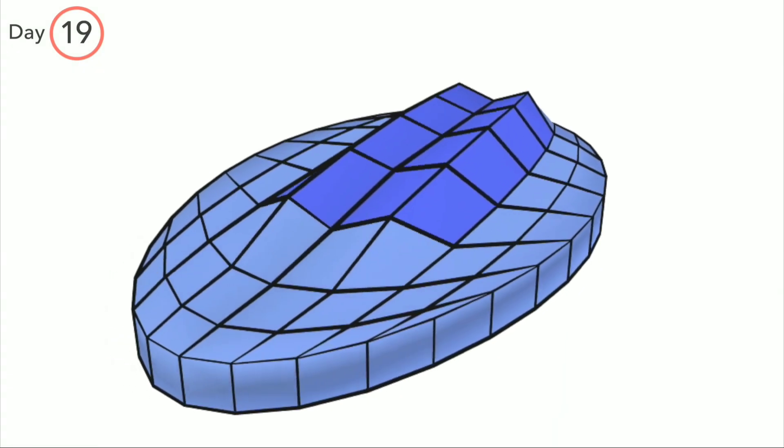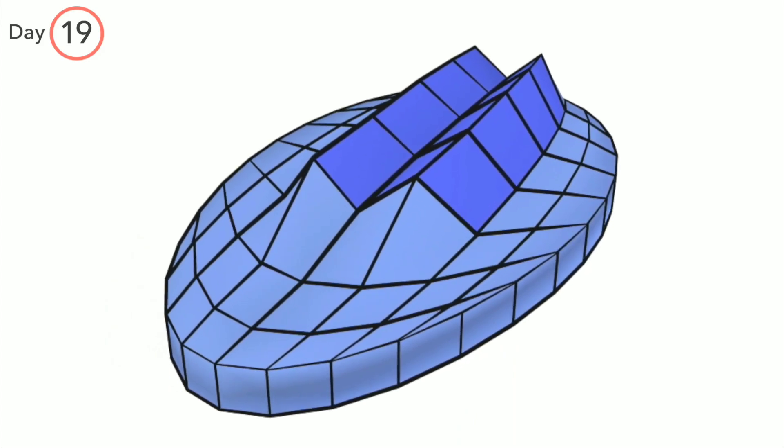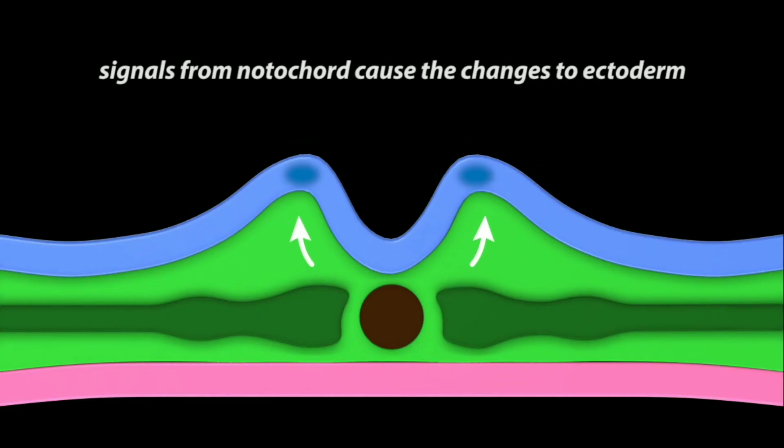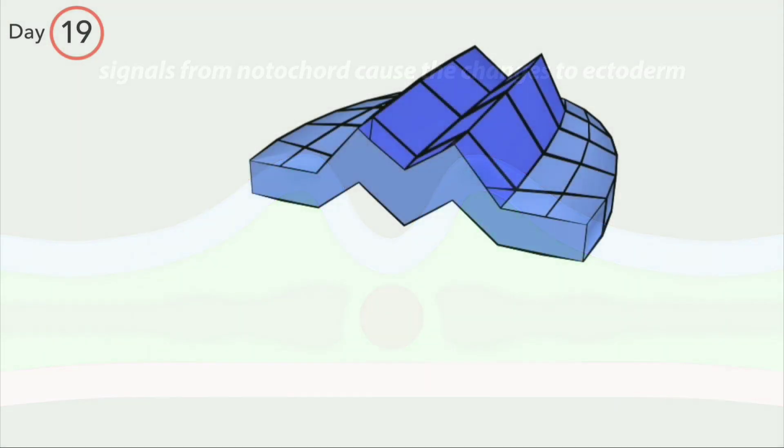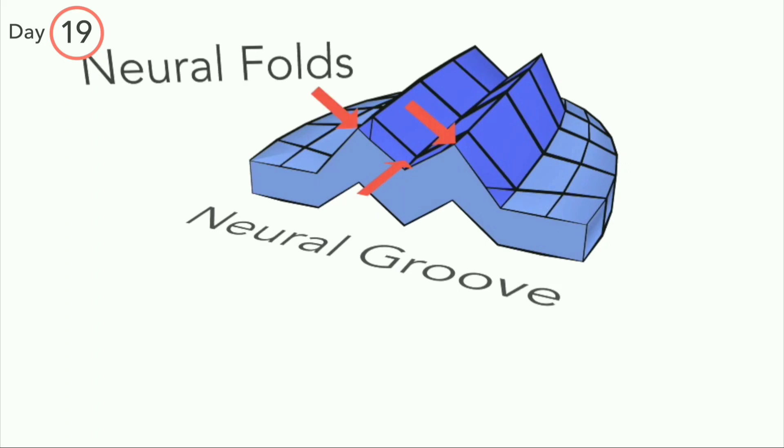On day 19, the neural plate starts to buckle in the midline. Signals from the notochord are responsible for changes in the ectoderm. The depression created is called the neural groove, while the mound-like structures are termed neural folds.